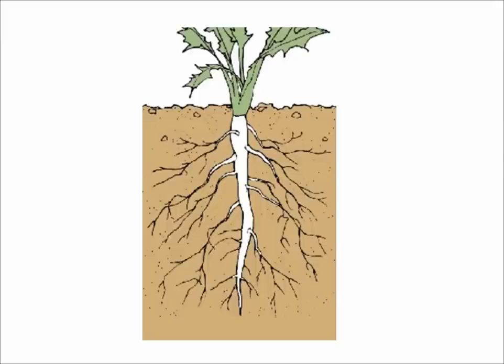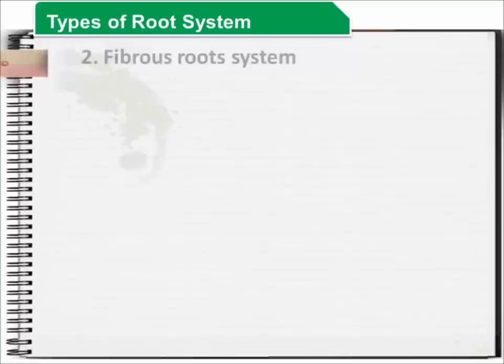This is how taproots look like, and as you can see, there is a main root that grows downward. It is where the secondary roots branch off.